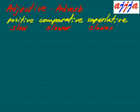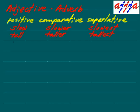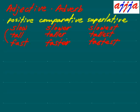What about 'tall'? So tall — that's positive. Then 'taller,' and 'tallest.' Those are adjectives. What about 'fast'? Faster, fastest. So 'fast' can be an adjective or adverb. You just add -er for comparative and -est for superlative. That's the regular pattern.